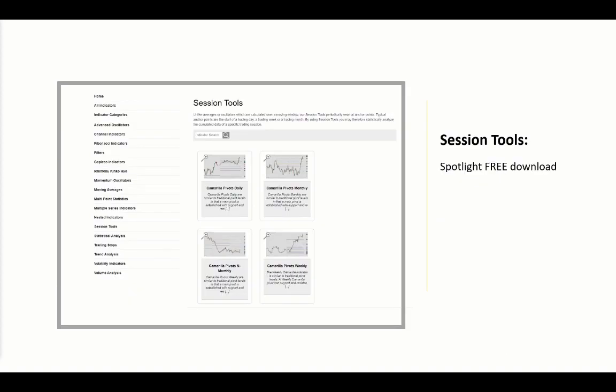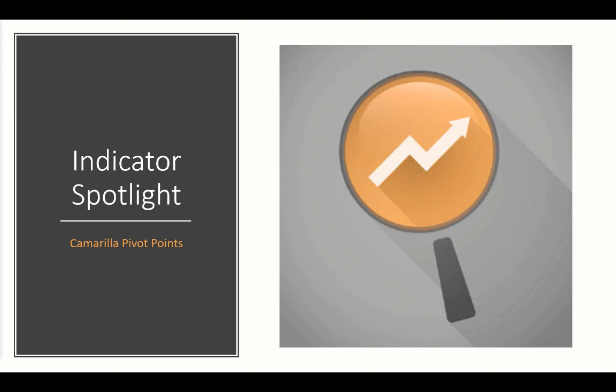That wraps up this Indicator Spotlight. You can pick up your free download for the Camarilla Pivots Daily in the session tools category. We also offer weekly, monthly, and end-of-month Camarilla indicators, along with other session tools including rolling pivots, hourly pivots, the opening range, range projections, and TVAP and VWAP indicators. In total, our library has 145-plus indicators, all available for a one-time payment of only $195 — that's for all indicators, not each one, and it's a one-time flat fee, not a monthly recurring subscription. If you like the Indicator Spotlight newsletter, make sure to subscribe to the channel and give the video a thumbs up or leave a comment.